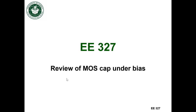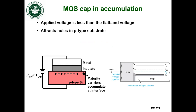Now let's talk about accumulation. In this case, I'm applying even more of a negative voltage than the flat band voltage, so I just keep cranking my power supply to have more and more negative voltage between the metal and the semiconductor. I'm not only compensating for the positive charge at the oxide interface, but I'm actually making enough negative charge on the metal that I'm starting to attract holes to this interface.